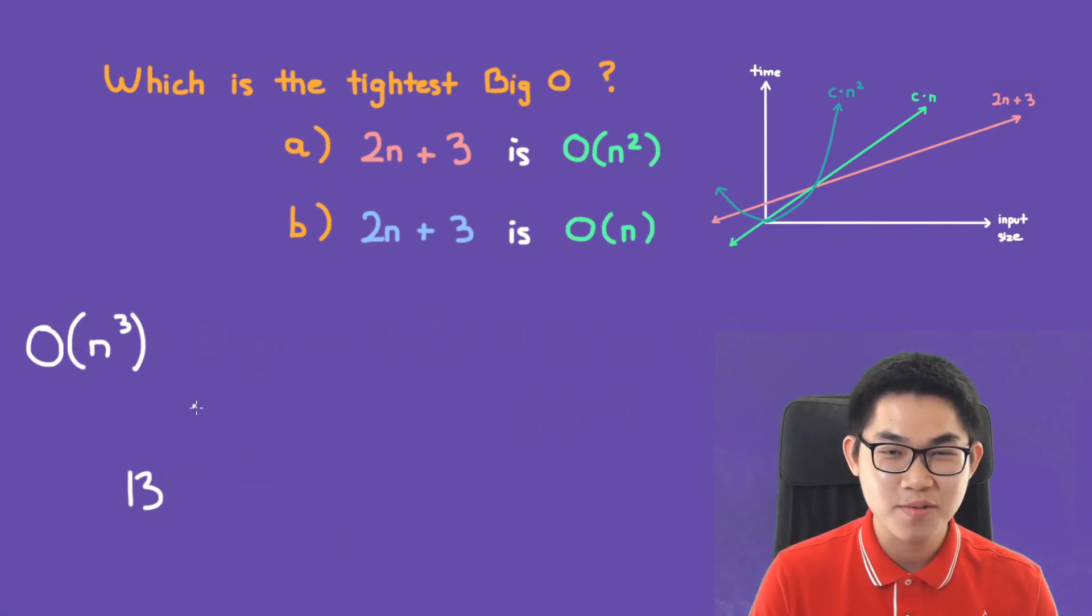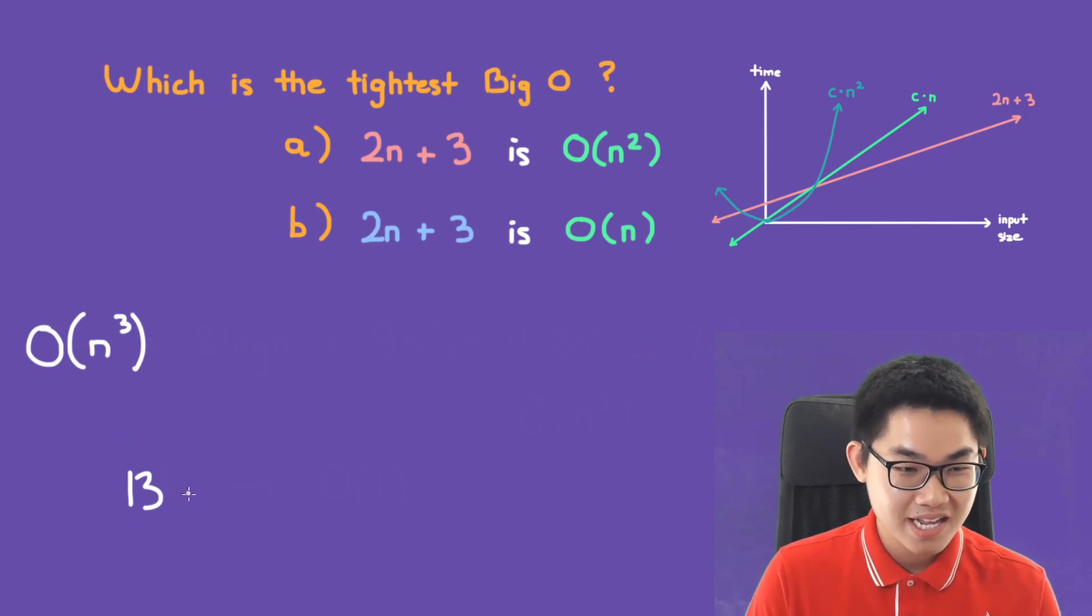A special case is when you only have a constant. So if it's only a number, then this will automatically be considered O(1).